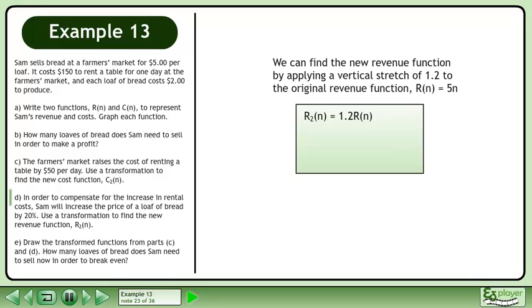We can find the new revenue function by applying a vertical stretch of 1.2 to the original revenue function, R of n equals 5n. Replace R of n with 5n. The new revenue function is R2 equals 6n.